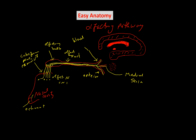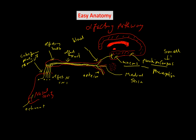The lateral stria is the important one — it goes to the primary cortical area responsible for perception of smell, called the uncus. The uncus continues posteriorly with the parahippocampus, which is responsible for memory of smell. The uncus is for perception, the parahippocampus is for smell memory, and it also has a relation to emotional reactions related to smell memory. This is part of the limbic system.